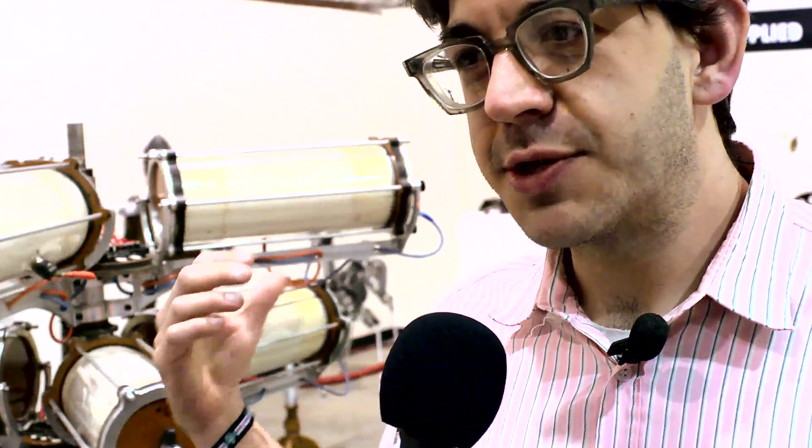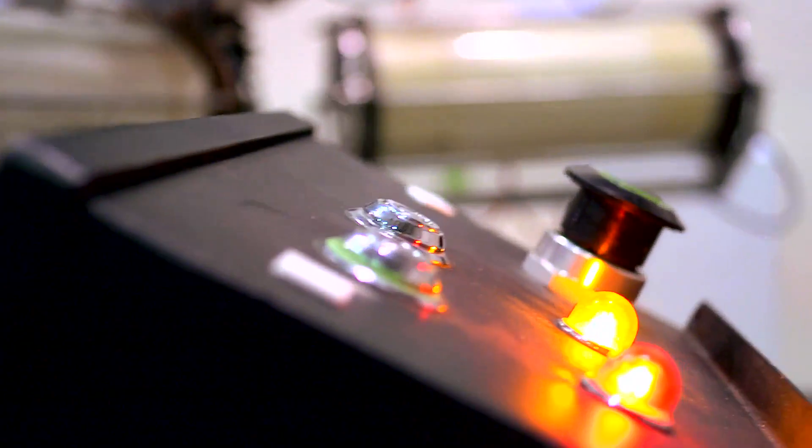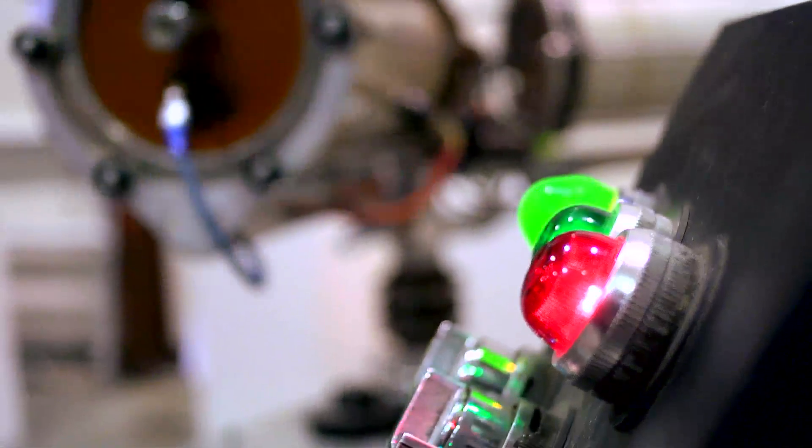This is a kinetic sculpture of a rocket ship engine. This was part of the Raygun Gothic rocket ship, which was here at Maker Faire last year and is on the Embarcadero in San Francisco right now. Since it's not going anywhere for a while, we pulled the engine out and brought it here so we could show it off specifically.